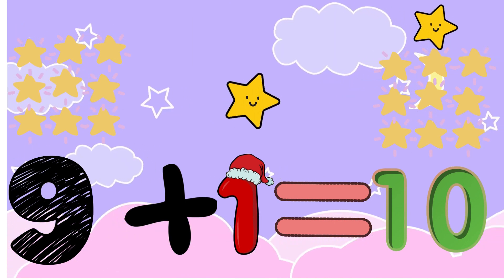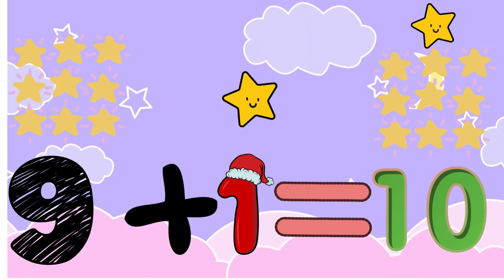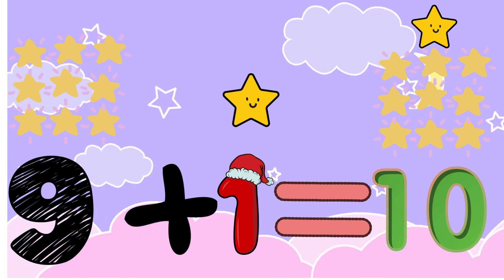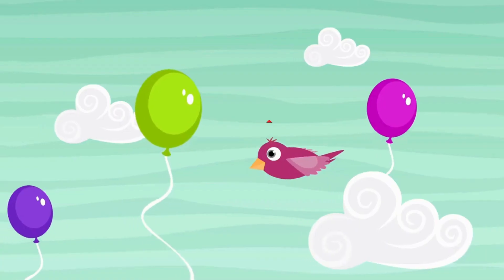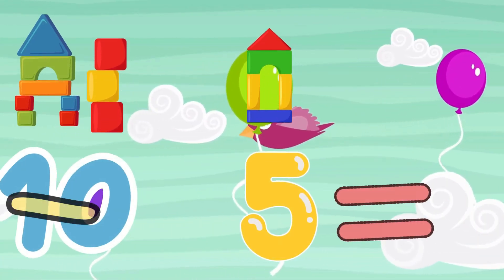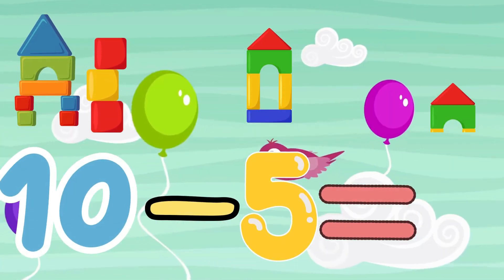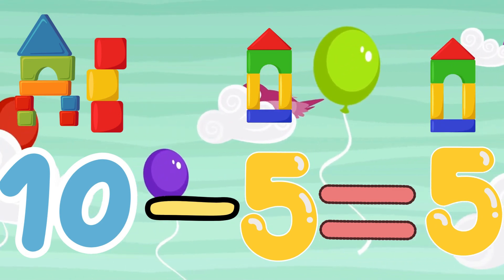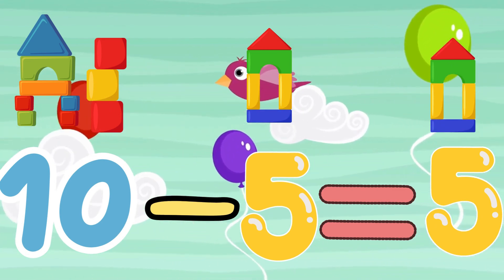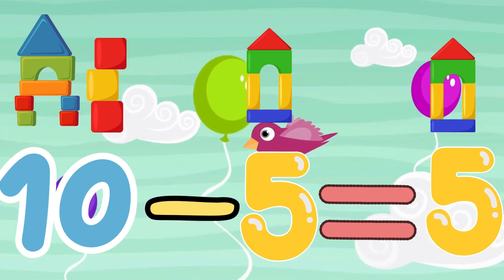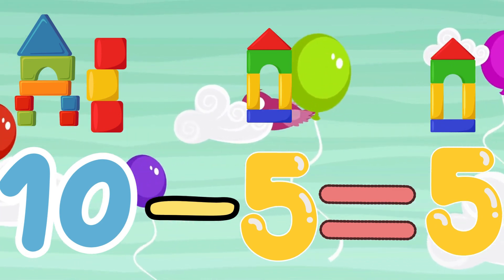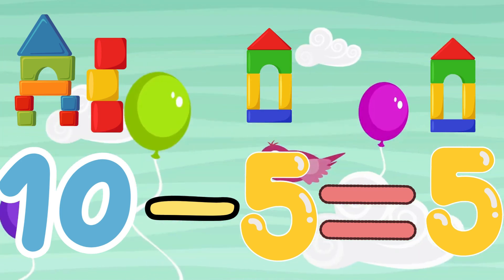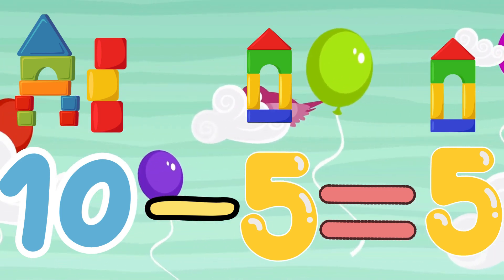9 stars plus 1 star equals 10 stars. 10 minus 5 equals 5. If you have 10 building blocks and you use 5, you have 5 left.